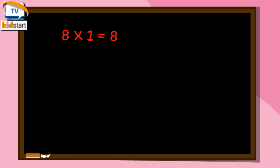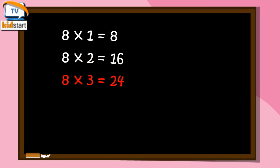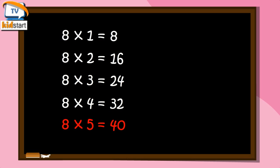8 ones are 8. 8 twos are sixteen. 8 threes are twenty-four. 8 fours are thirty-two. 8 fives are forty.